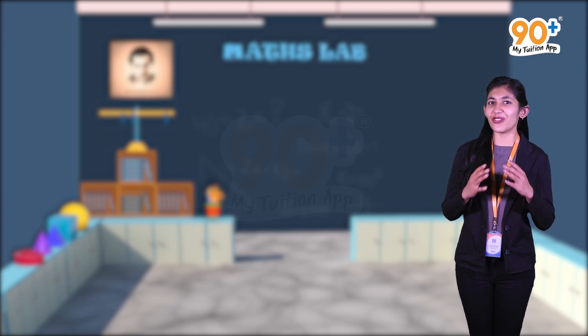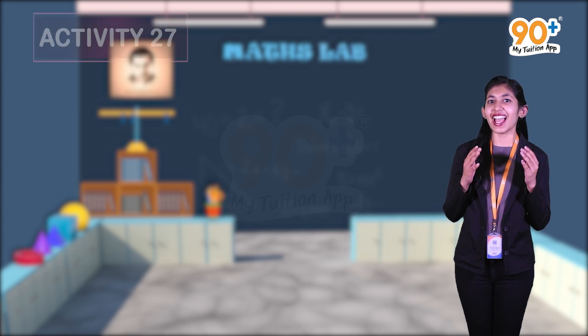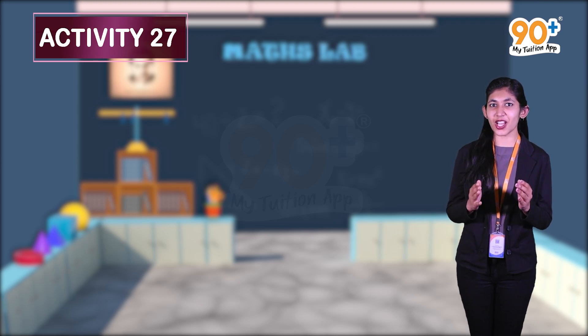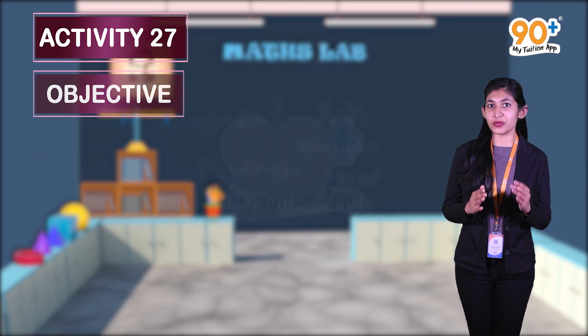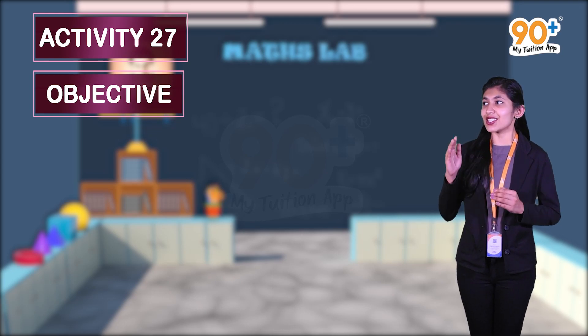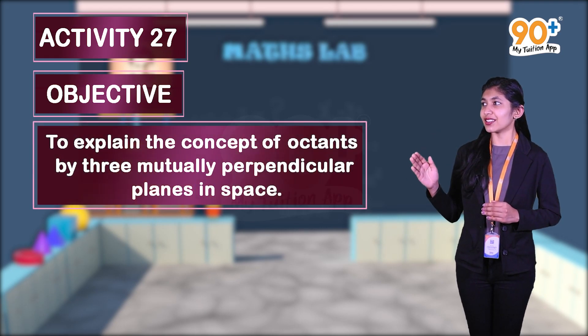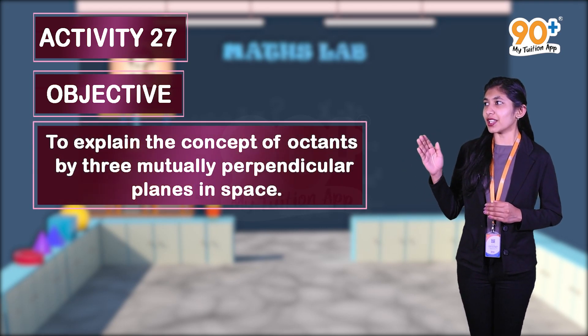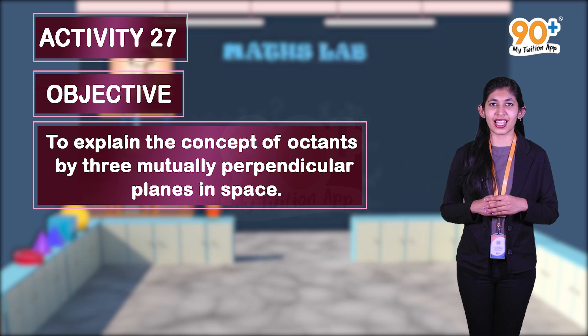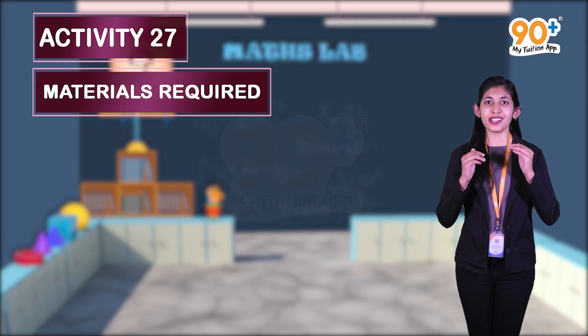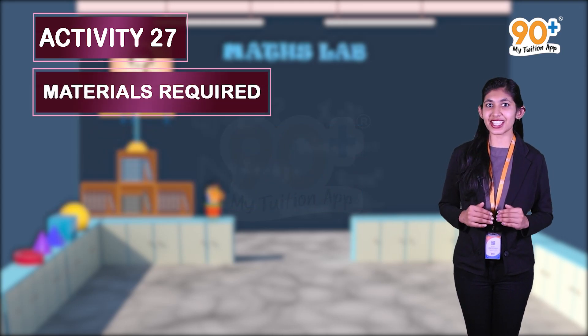Hello friends, welcome to the virtual lab of 90 Plus My Tuition App. Let's start Activity 27. This activity is based on the chapter 'Introduction to Three-Dimensional Geometry.' The objective of this activity is to explain the concept of octants formed by three mutually perpendicular planes in space.